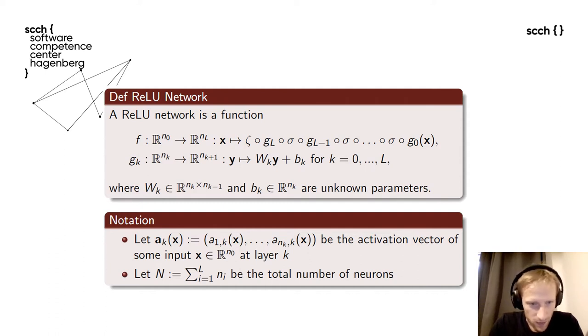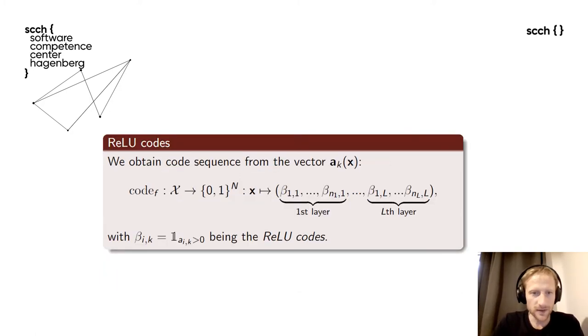Further, we need a notion of activation vector. The activation vector for some input x at layer k is just the vector of values on that layer k, of activation values on that layer k. We will also need a total number of neurons, denoted by capital L.